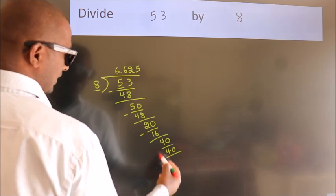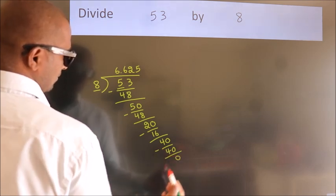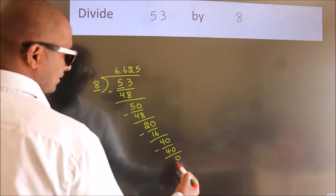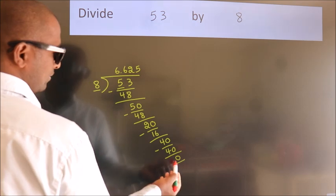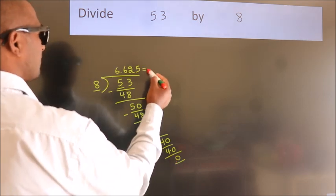Now we subtract. We get 0. Here we got remainder 0. So this is our quotient.